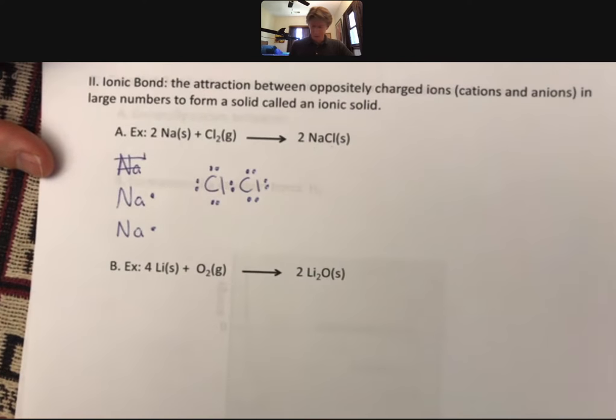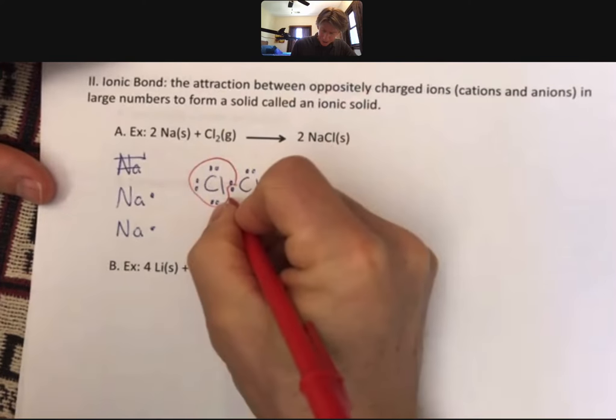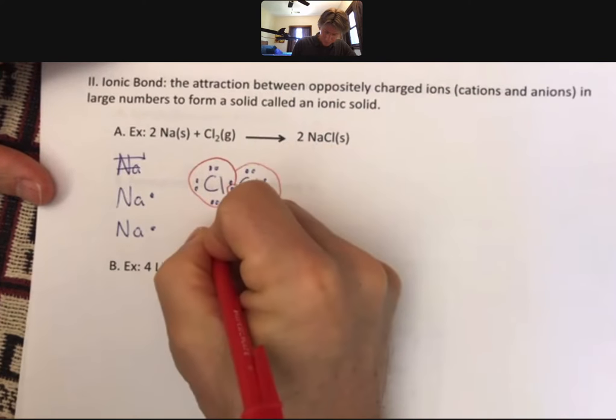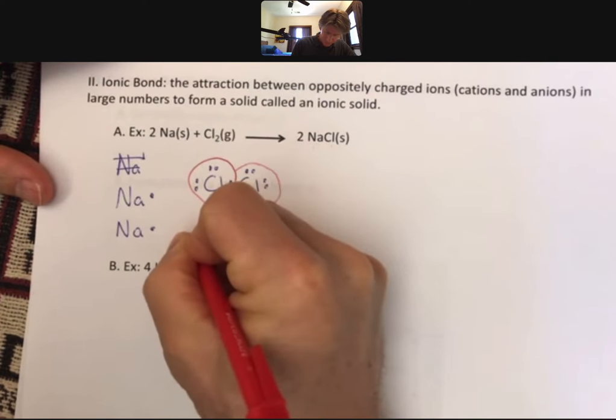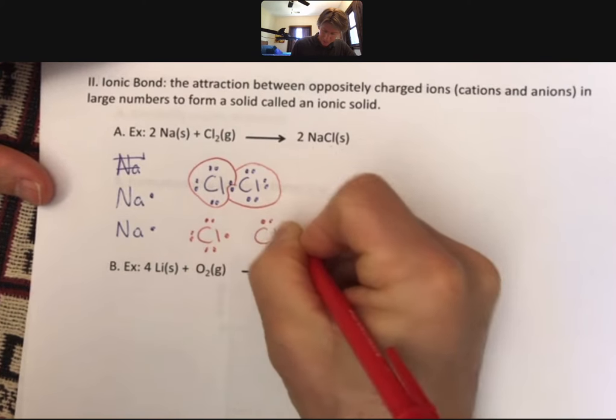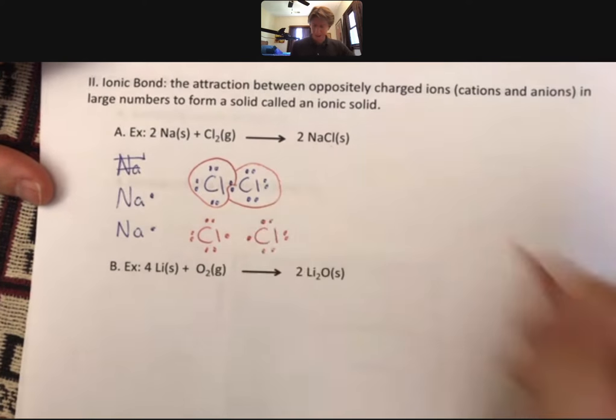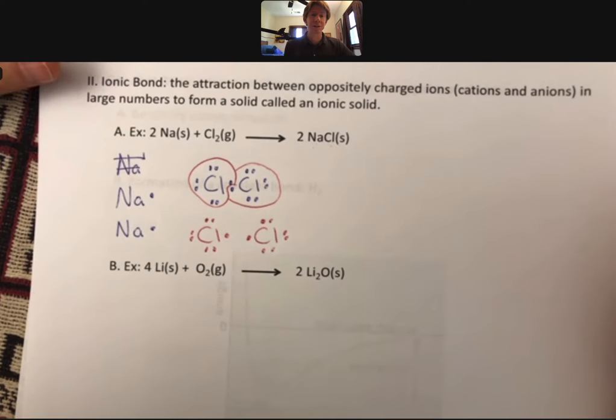What we're going to do in this process is sort of break this bond and end up with two separate Cl atoms, like so. All of our electrons are still accounted for.